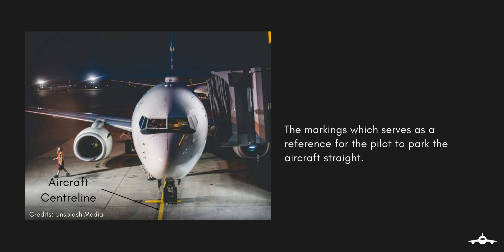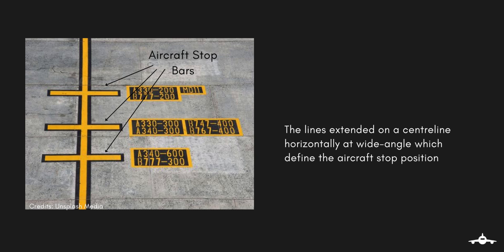An aircraft center line consists of markings which serve as a reference for the pilot to park the aircraft straight. They are marked after careful calculations with regard to aircraft dimensions. Aircraft stop bars are lines extended on the center line horizontally at a wide angle, which define the aircraft stop position.